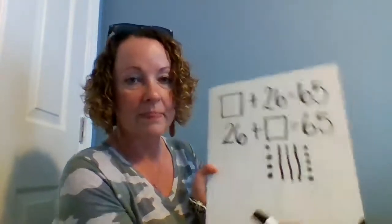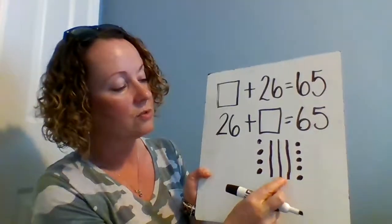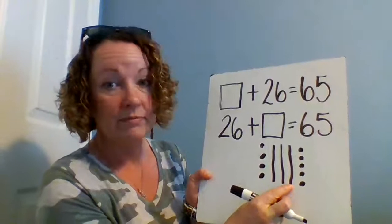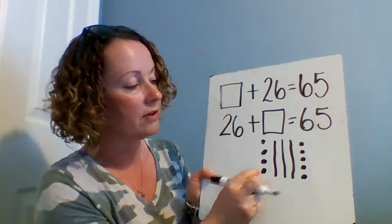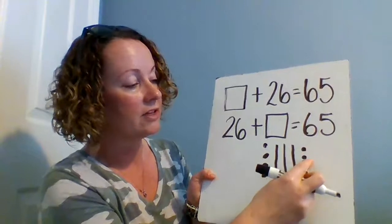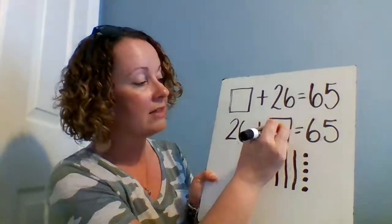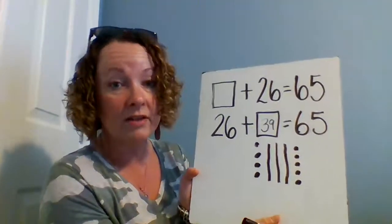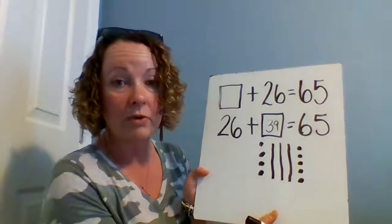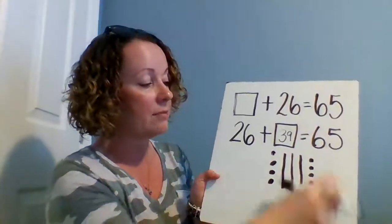All right, let's see what I think my answer is. First I'm going to count my tens. 10, 20, 30. Now my ones. 31, 32, 33, 34, 35, 36, 37, 38, 39. So I think my answer is 39.